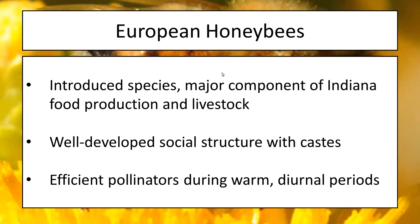Bees are considered very efficient pollinators, with many ways to communicate to their sisters about food. However, honeybees primarily function during the warmer season and when the sun is shining — they are diurnal pollinators. That limits their active time and creates challenges for farmers, who need to monitor when they apply insecticide to avoid accidentally impacting bee populations.